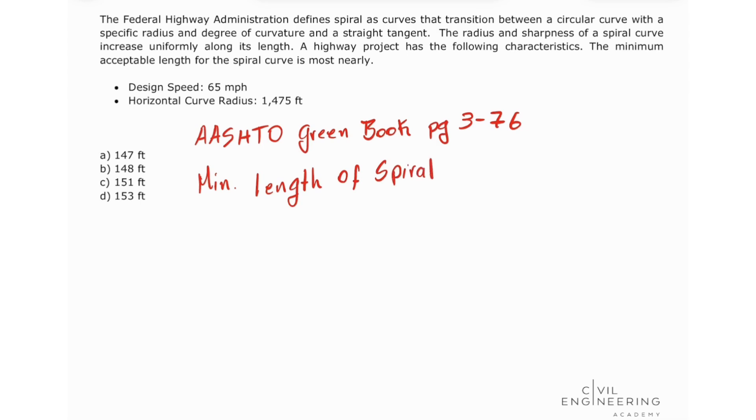And we're going to see two equations: Equation 3-27 and equation 3-28. Equation 3-27 states that the minimum length for the spiral is equal to the square root of 24 times P_min times R. This is the minimum lateral offset between the tangent and the circular curve.